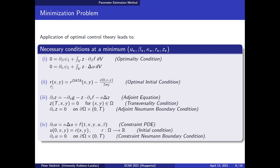If we derive with respect to the initial condition r and set it to zero, we get an expression for the optimal initial condition. If we derive with respect to u we get adjoint equations. In this case we have a transversality condition which gives us information about the adjoint function at the end time point capital T. We also receive Neumann boundary conditions for the adjoint equation, which again includes the Laplace operator. Deriving with respect to the adjoint functions brings us back to the constraint PDE.